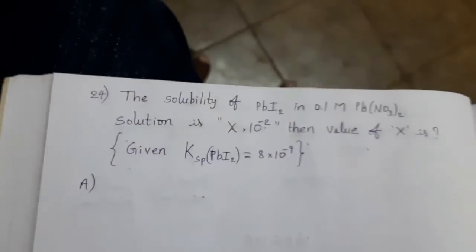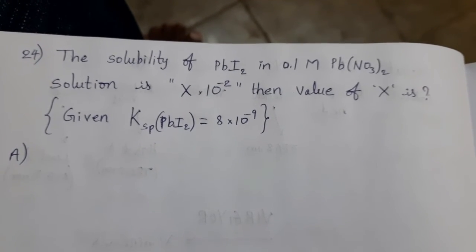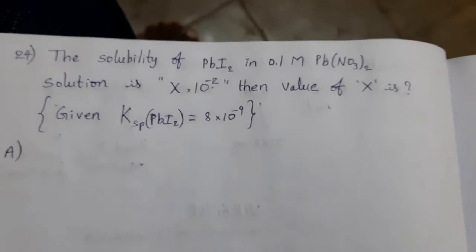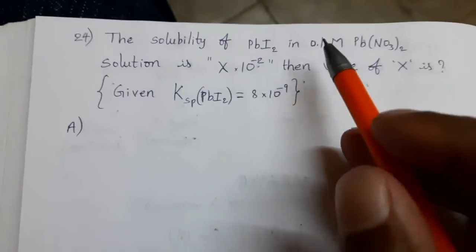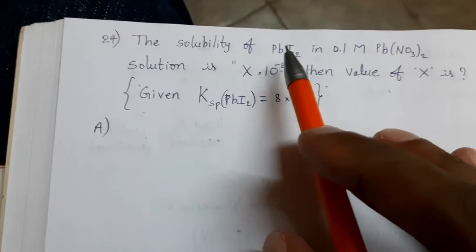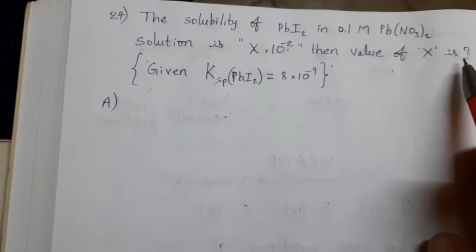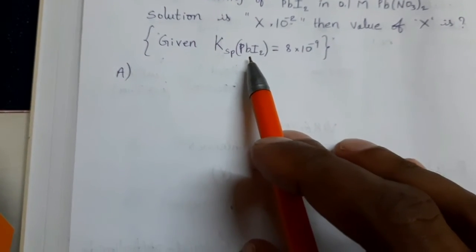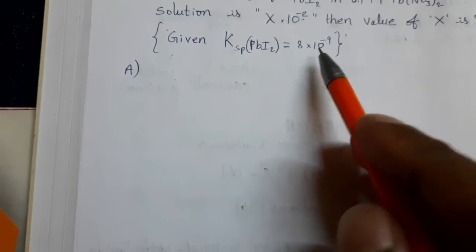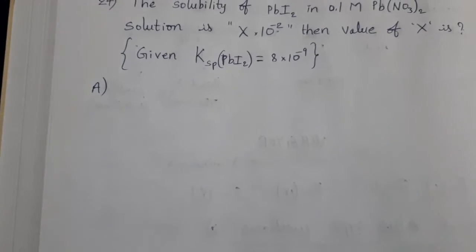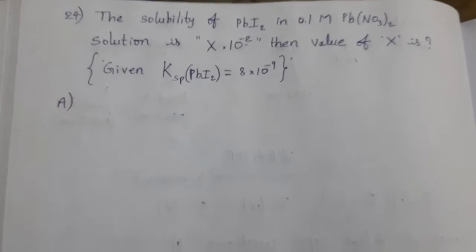Next. The solubility of PbI2 lead iodide in 0.1 molar Pb(NO3)2 lead nitrate solution is x into 10 power minus 2. In this solution, its solubility is x into 10 power minus 2. Then, value of x is, given Ksp of PbI2. Solubility product of lead iodide equal to 8 into 10 power minus 9. Now, we want to find out x value.